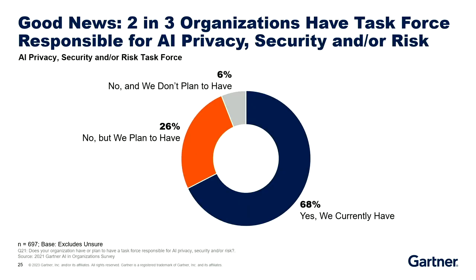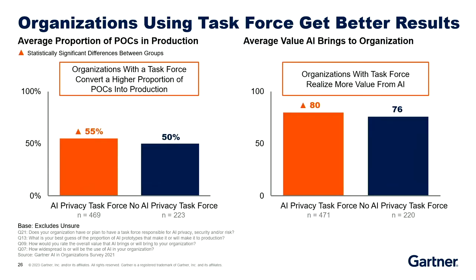We find that most organizations have a task force. In 2022, we published research showing 68% said they had a task force, and we're seeing the same thing with Gen AI. When you do have a task force, you can expect to get better results — more projects move into production and organizations say they realize more business value, because everyone's on the same page. They know what to expect, what the model is supposed to do, and what the risks are — so you end up getting better business results.